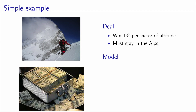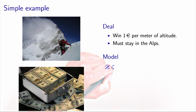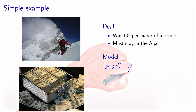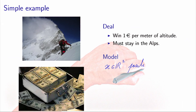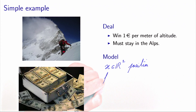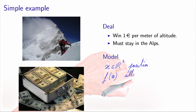Let's try to model this now. To model an optimization problem, we need to define the decision variables, the objective function, and the constraints. The decision variable x will be latitude-longitude — the position on the planet that the alpinist decides to reach. The objective function f(x) is the altitude at point x, and this is something we want to maximize.